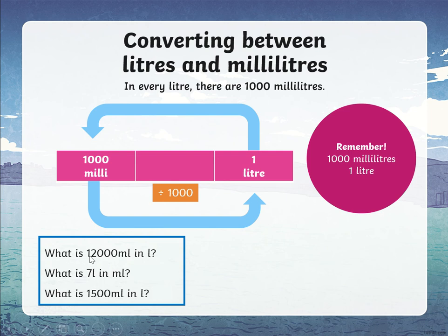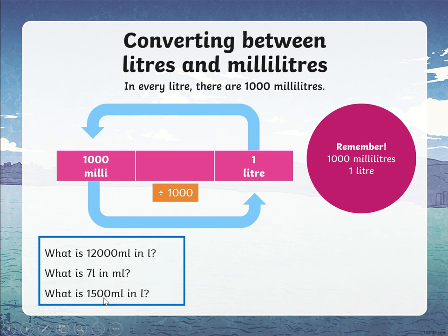See if you can do these: What is 12,000 milliliters in liters? Going from milliliters to liters, you divide — take away the zeros. What is 7 liters in milliliters? Going to milliliters, you multiply by 1,000, adding three zeros. What is 1,500 milliliters in liters? There are only two zeros and a five, and since 500 milliliters is half of 1,000, it would be one and a half liters.